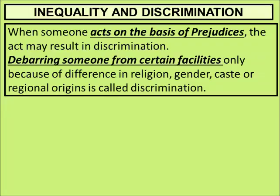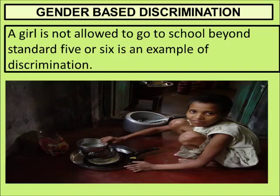The next words are inequality and discrimination. When someone acts on the basis of prejudices, this act may result in discrimination. Discrimination means stopping someone from a certain facility. For example, if you send a boy to school but not a girl, that is discrimination. Discrimination is based on various differences: religion, gender, caste, and region. The first type is gender-based discrimination — a girl not being allowed to go to school beyond class five or six is an example of discrimination.